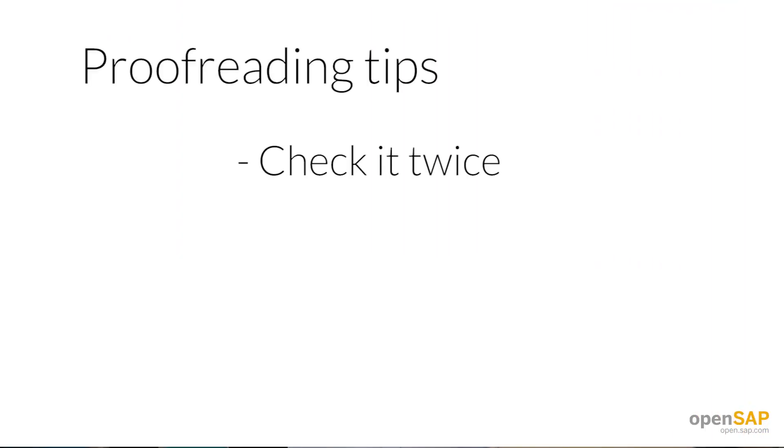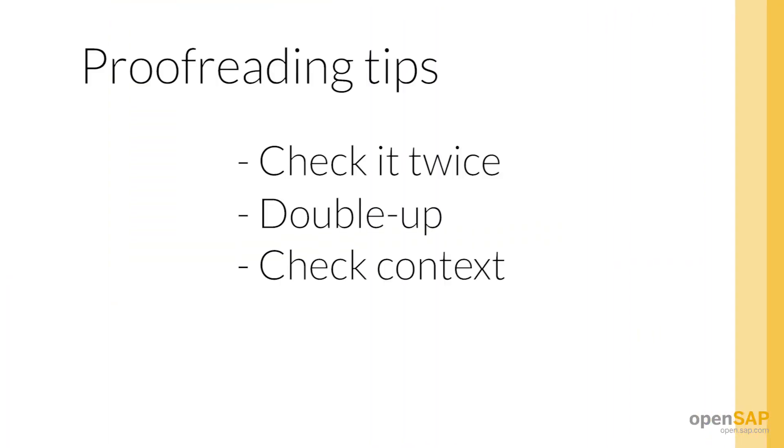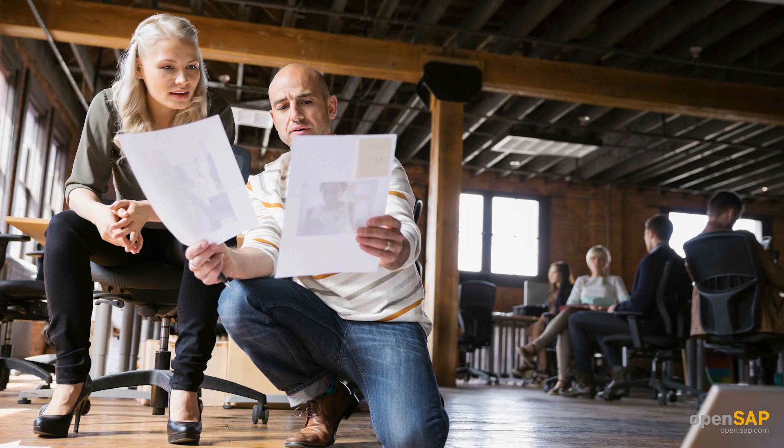Here are some quick proofreading tips. Check it twice — don't just skim through your copy one time, proof it at least twice and make sure to do it slowly. Double up: because we generate the copy as the writer and spend so much time with it, it's often hard to find typos and other mistakes in our own writing. So use the buddy system — get someone else to take a look. This can also be a nice trick to find out what everyone else is working on.